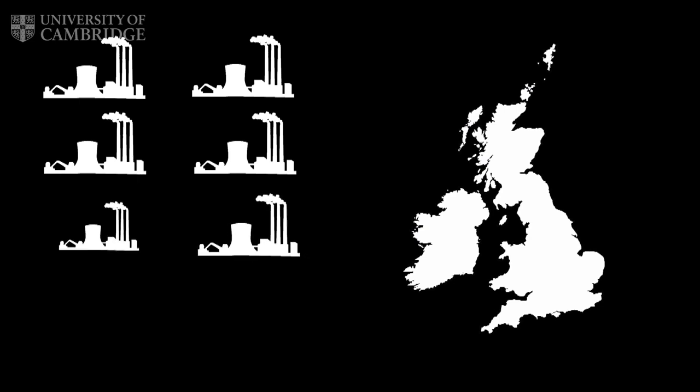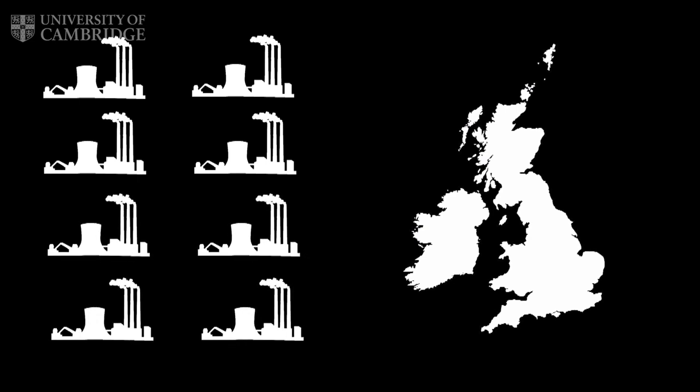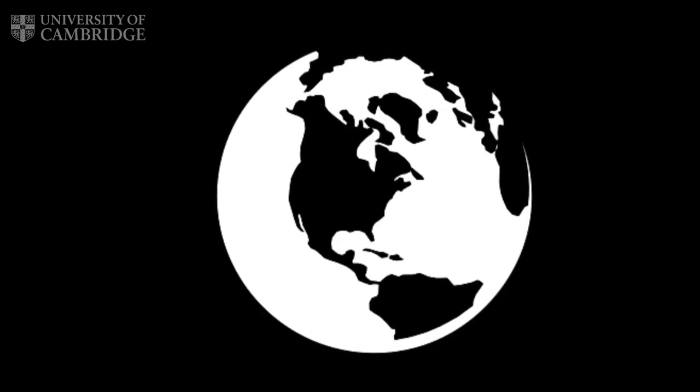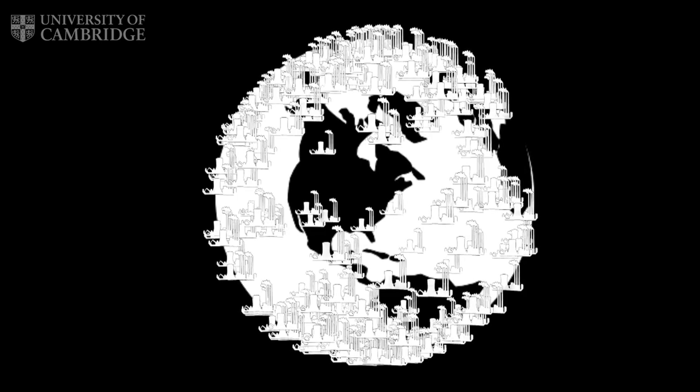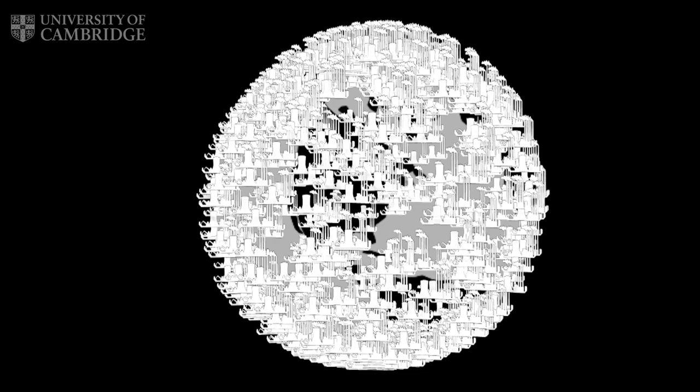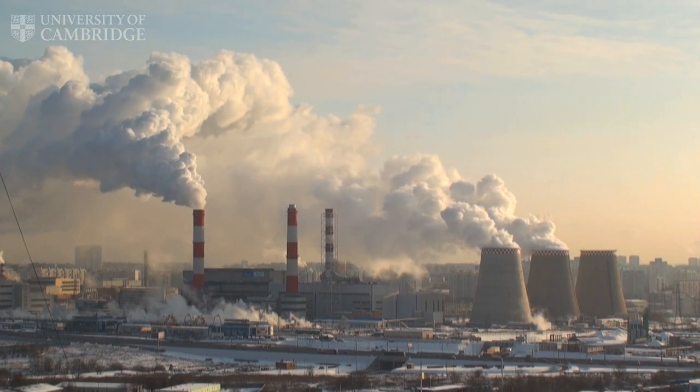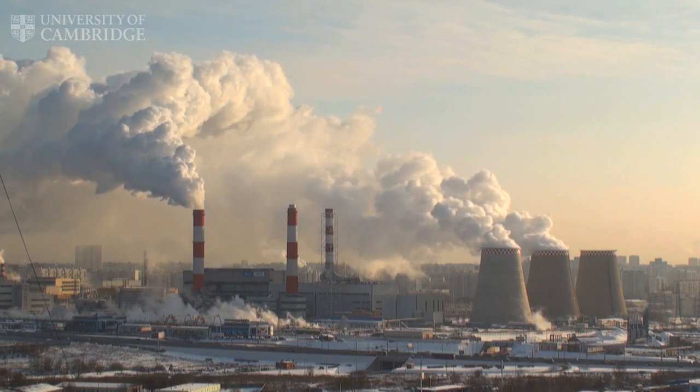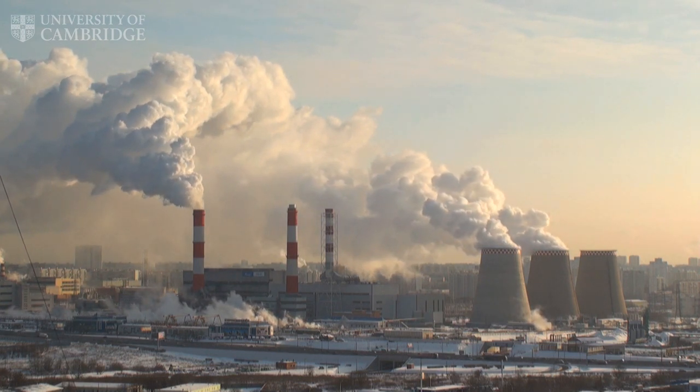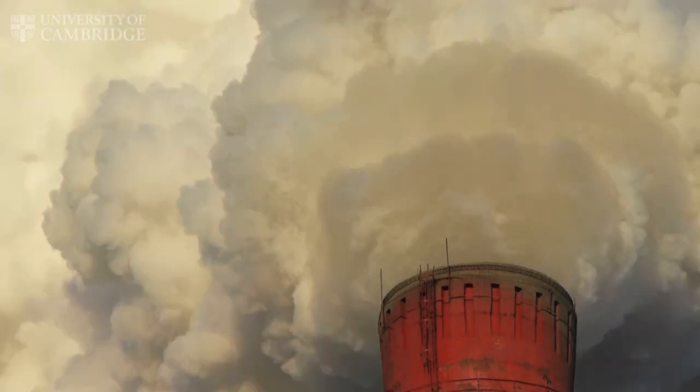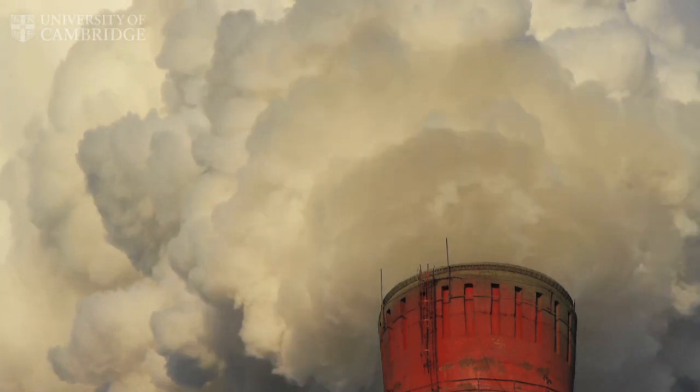We could close in the UK 8 large power stations or not build 8 new power stations. In the world, we could save over 600 power stations globally. The energy savings are remarkable. Concerning carbon dioxide emissions, we could save at least 10% of all the carbon dioxide emitted by power stations by using LED lighting. So a major contribution to saving carbon emissions.